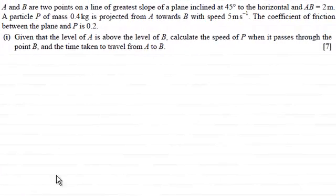Hi there. Now in this question, we're given that A and B are two points on a line of greatest slope of a plane inclined at 45 degrees to the horizontal, and AB is equal to 2 meters. A particle P of mass 0.4 kilograms is projected from A towards B with a speed of 5 meters per second. The coefficient of friction between the plane and P is 0.2.